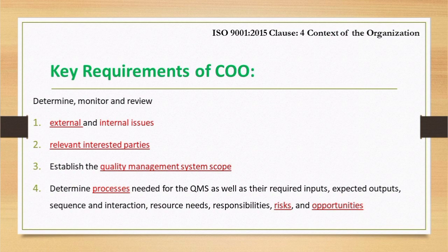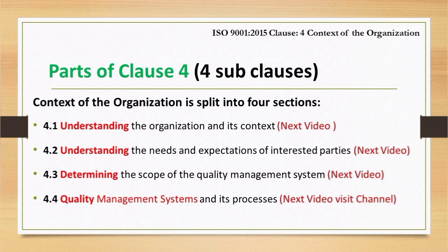The requirements also include determining the processes needed for the quality management system, as well as their requirements, inputs, expected outputs, sequence and interactions, resource needs, responsibilities, and risks and opportunities. There are four sub-clauses of context of the organization: 4.1 Understanding the Organization and Its Context, 4.2 Understanding the Needs and Expectations of Interested Parties, 4.3 Determining the Scope of the Quality Management System, and 4.4 Quality Management System and Its Processes. A detailed discussion of these four sub-clauses is available on our YouTube channel with separate videos on each.